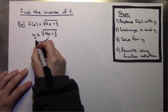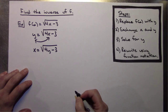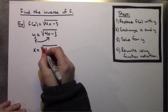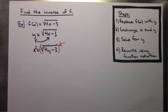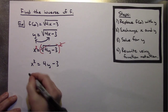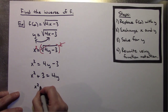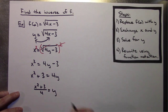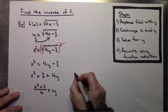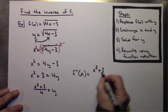Next, exchange X and Y, so X equals the square root of 4Y minus 3. Now solving for Y: square both sides to get X² equals 4Y minus 3. Add 3 to both sides: X² plus 3 equals 4Y. Divide both sides by 4: Y equals (X² plus 3) over 4. Writing this in function notation, the inverse function F⁻¹ of X equals (X² plus 3) over 4.